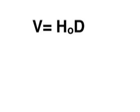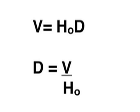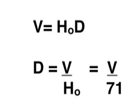Going back to the original equation, and then rearranging that, we can calculate distance from D equals velocity over Hubble's constant, which is V over 71.